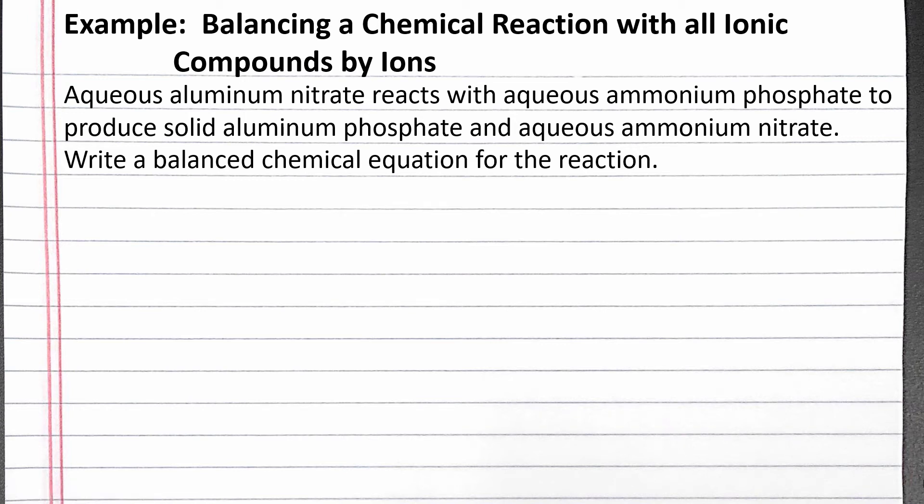In this example problem, we balance a chemical reaction which contains all ionic compounds by balancing the ions on each side. Our problem reads, aqueous aluminum nitrate reacts with aqueous ammonium phosphate to produce solid aluminum phosphate and aqueous ammonium nitrate.